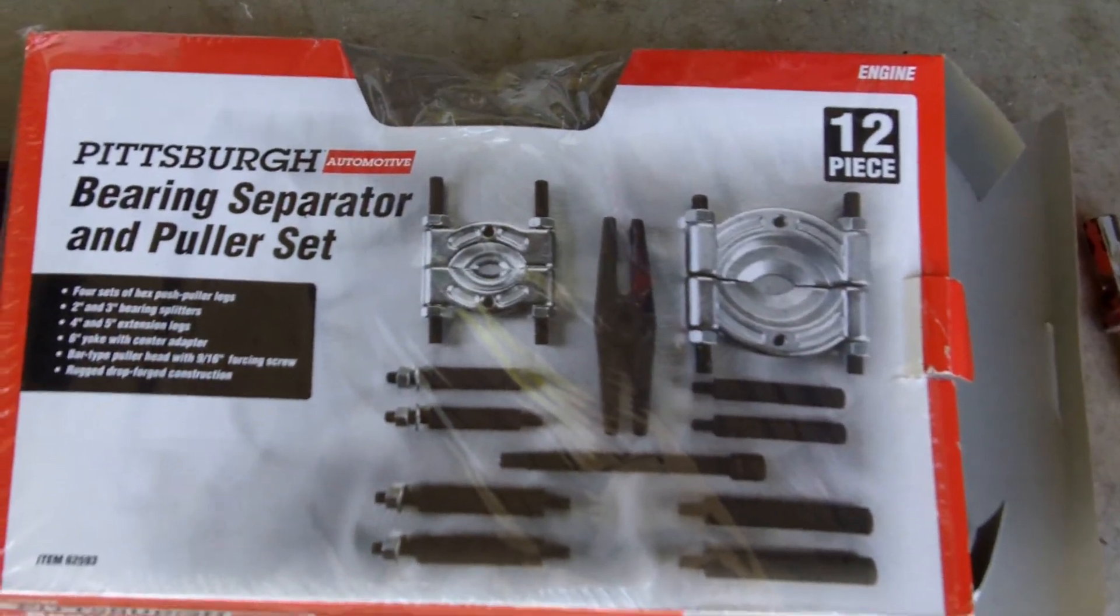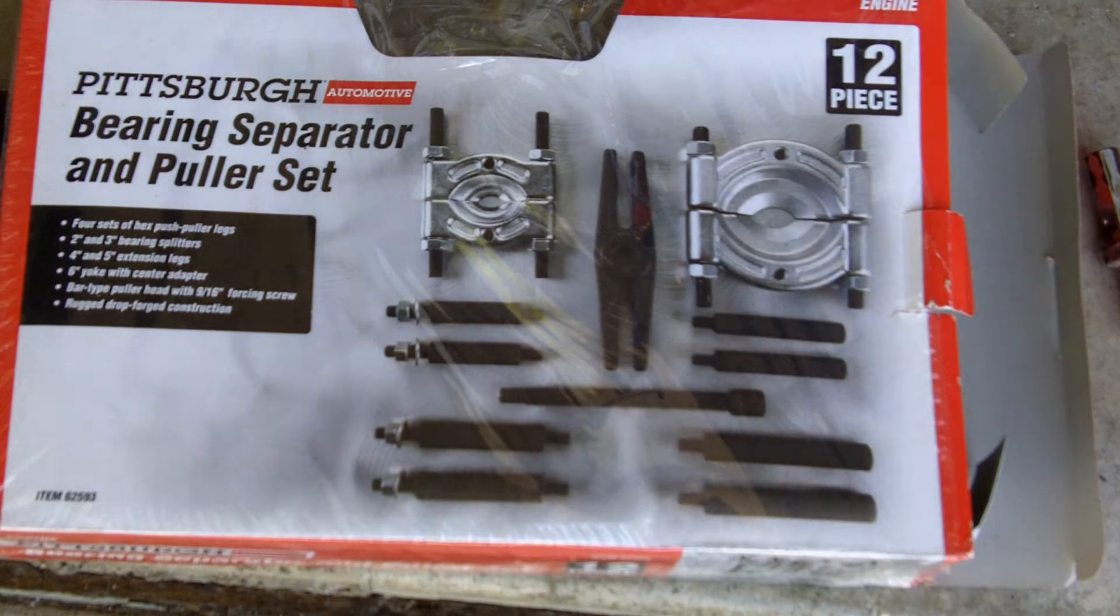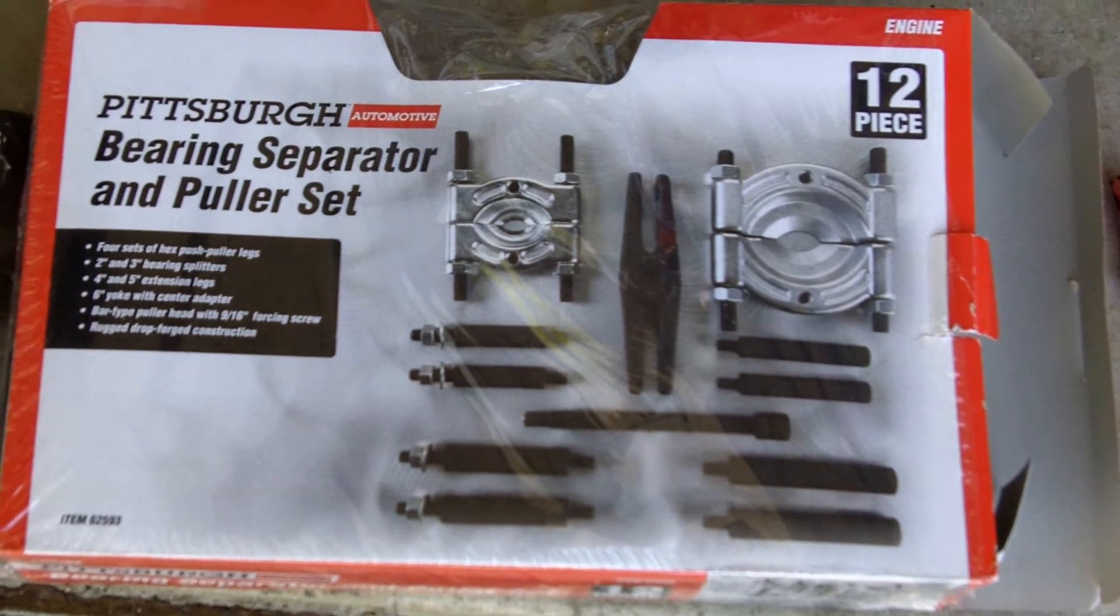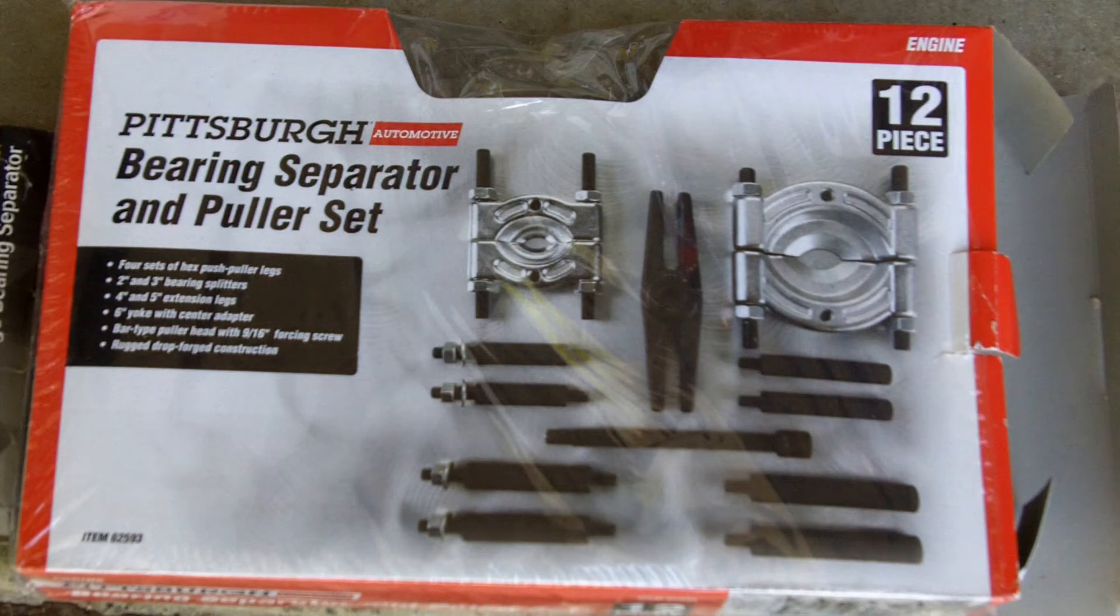So what we ended up doing was I had this set. It's item number 62593, bearing separator and puller set from Harbor Freight. It's a pretty good set, does pretty good stuff.